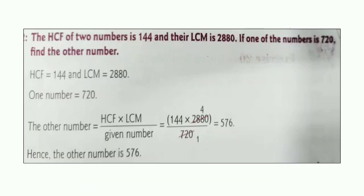Next question. The HCF of two numbers is 144 and their LCM is 2880 and one number is 720. You have to find the other number. What is given? HCF is given, LCM is given, one number is given, and you have to find the other number.